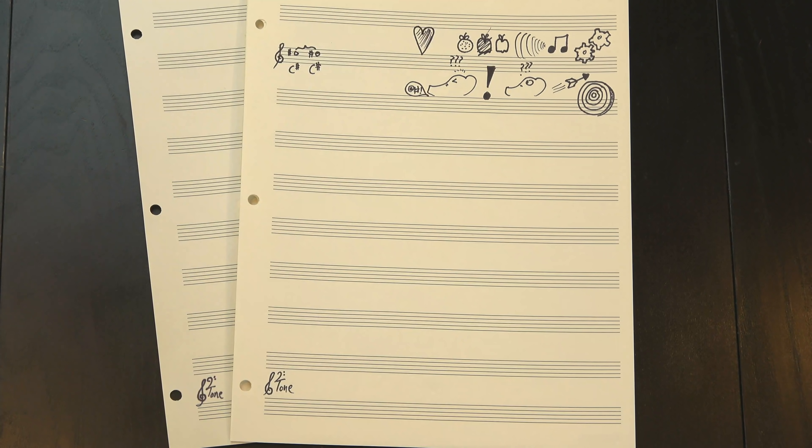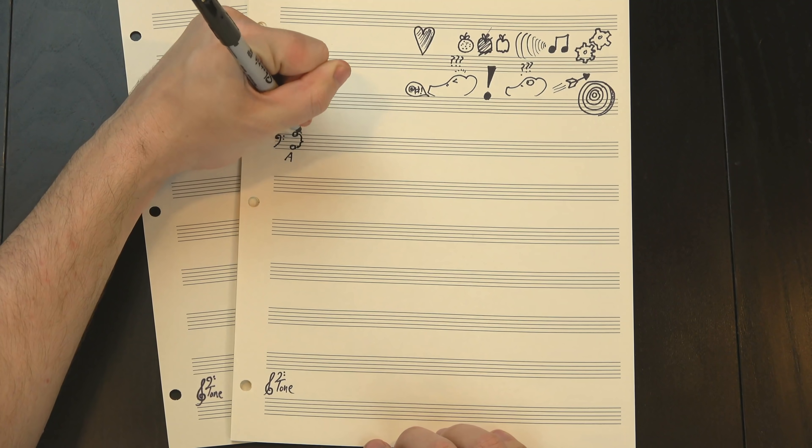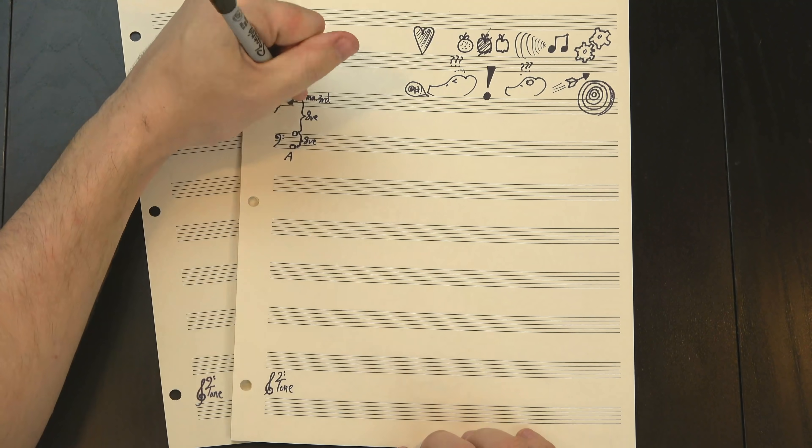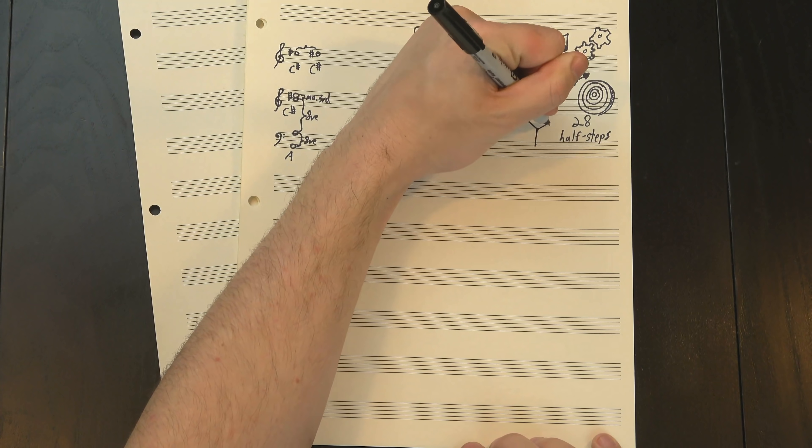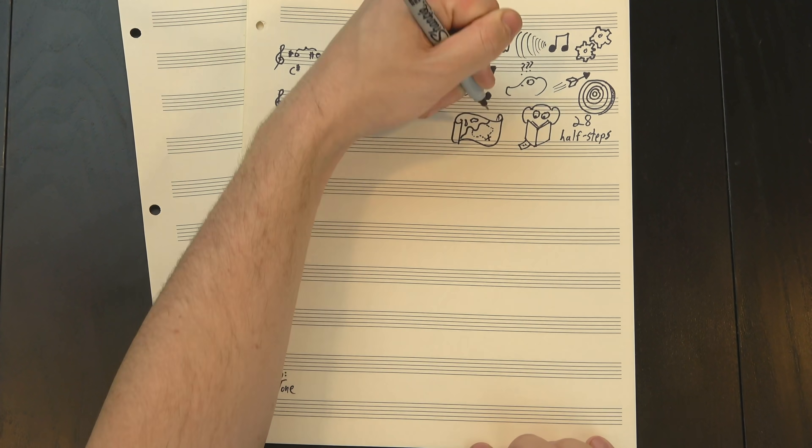At its heart, the issue here isn't really with this C-sharp or this C-sharp, it's with this A. You see, if we start there, go up an octave, then another octave, and finally a major third, we land on C-sharp. We've gone up a total of 28 half-steps, which is a pretty long way, but we can still easily work out what it's supposed to sound like. But that's not the only way to get there.